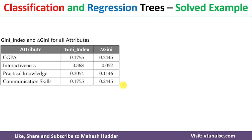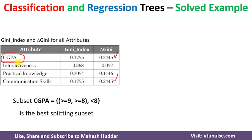Comparing all four attribute Gini values, CGPA and Communication Skill both have the maximum Gini of 0.2445. We need to select one as the root node. For this example, we consider CGPA as the root node. The best splitting subset for CGPA places {≥9, ≥8} on one side and {<8} on the other.